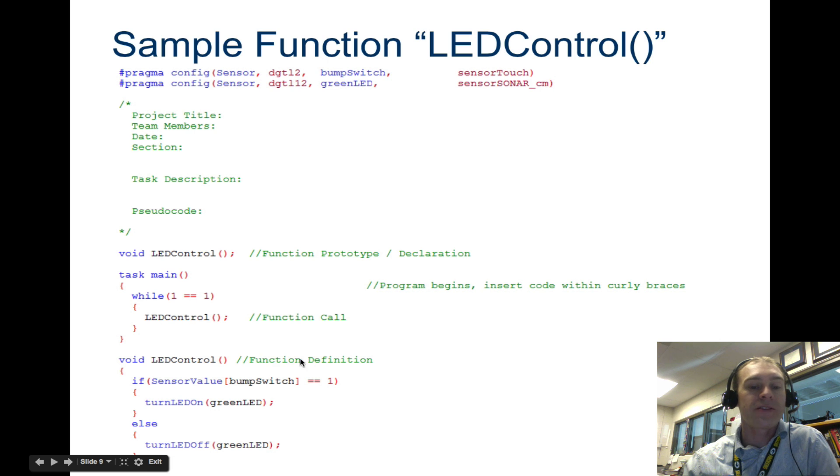So now down here, we define, function definition, we define what LED control is. So this is where you write your code. And so again, we say void LED control. You're probably not just going to remember how you declare these things using the word void and which ones have semicolon like the declaration does, but the definition doesn't. So you probably have to come back and look at this. So we actually define this down here. We put if sensor value bump switch is one. So if the bump switch is pressed, turn on the LED. Else, which means if it's not, turn off the LED. And that's our function. So then up here task main, while one is one, run this function forever. Which is calling this thing up down here.